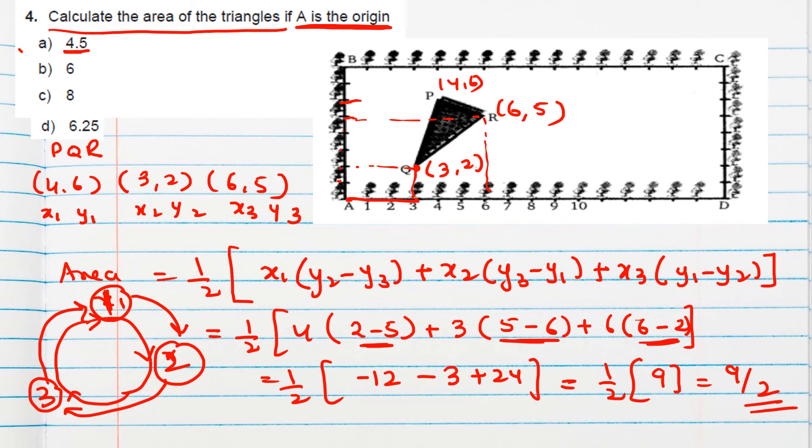So 9 by 2, if I write, answer could be 4.5. Okay. So option A will be correct option.